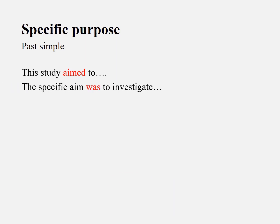For something with a specific purpose, you will need to use the past simple tense. For example, 'this study aimed to...' — because it's very specific, you use past simple. Here's another one: 'the specific aim was to investigate.' In this study we investigated — because you specify 'in this study,' it is specific, so you use 'we investigated.'